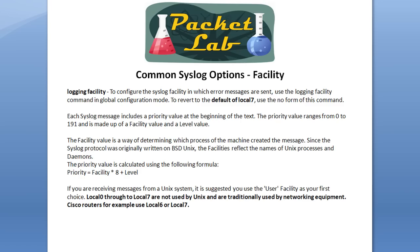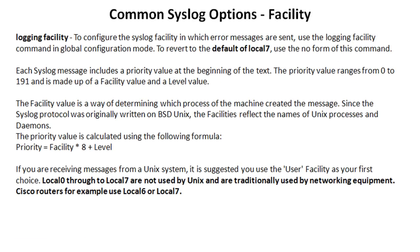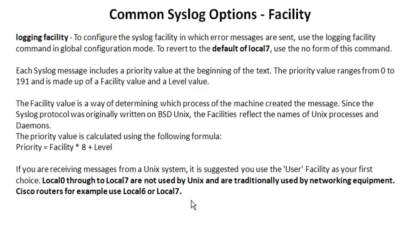The first Syslog option we're going to take a look at is facility. The command for that is 'logging facility', and then you'll have a number of different choices. Know that the default is local 7. Each Syslog message includes a priority value at the beginning of the text. That value is from 0 to 191, and it's made up of the facility value and a level value — this is something from Unix. The formula is: priority equals facility times 8 plus level. Local 0 through local 7 are not used by Unix and are traditionally used by networking equipment. Cisco routers use local 6 or local 7, and it defaults to local 7.